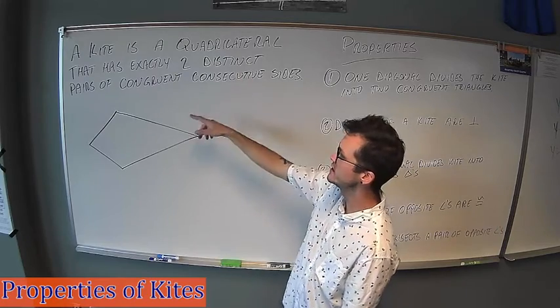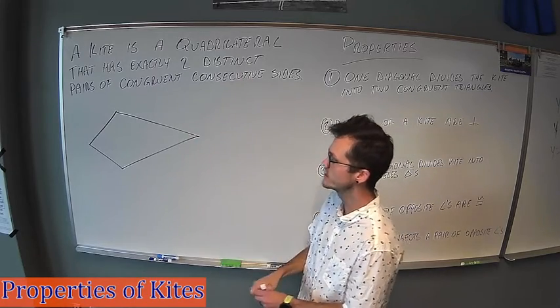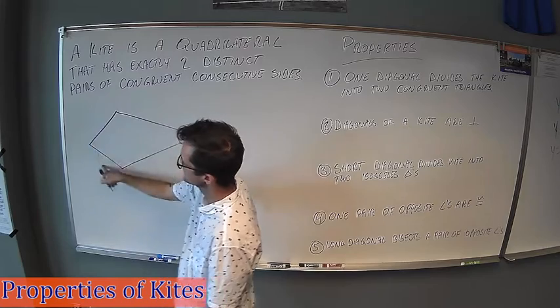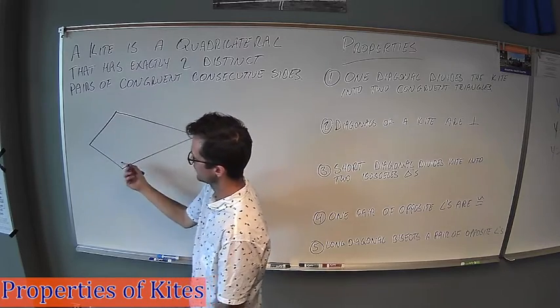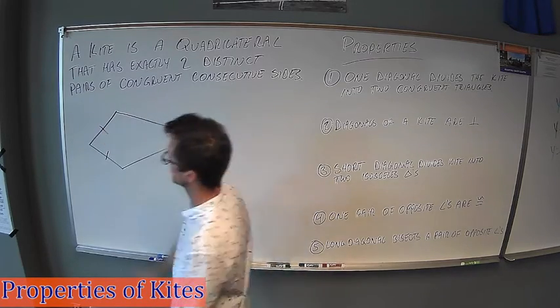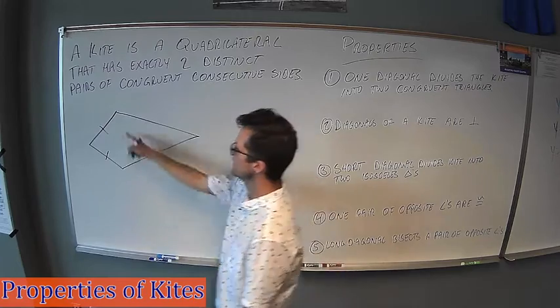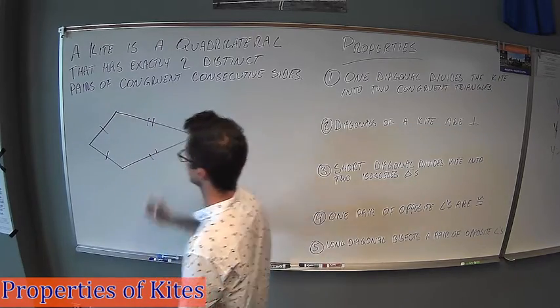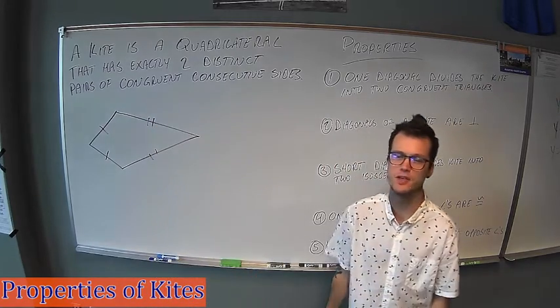So with a kite having two distinct pairs of congruent consecutive sides, that's like looking at these two sides. They are congruent and they're consecutive. They're right next to each other. So we can mark them with these little tick marks. Similarly, the longer ones must be congruent. That's the definition of a kite.